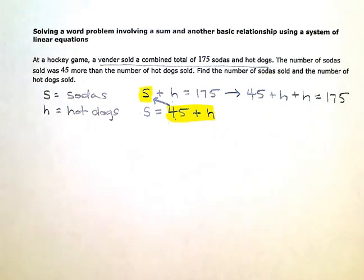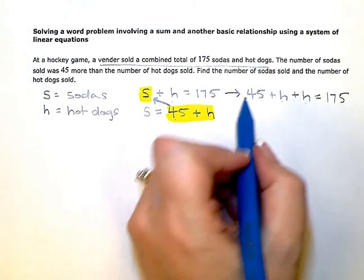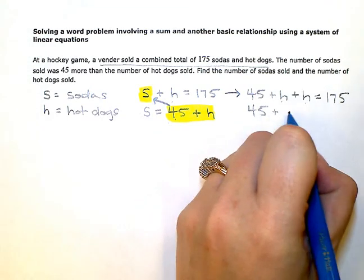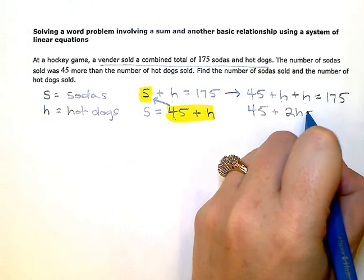Now just simplify, combine my like terms here. That would be 45 plus 2H equals 175.